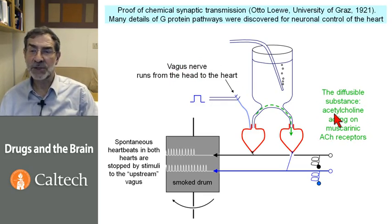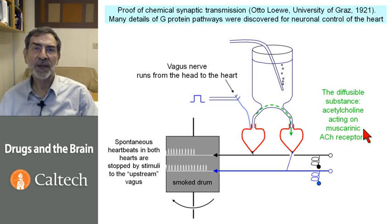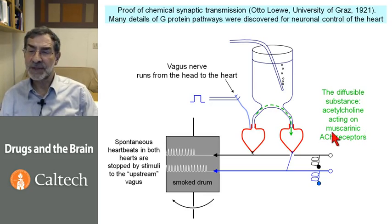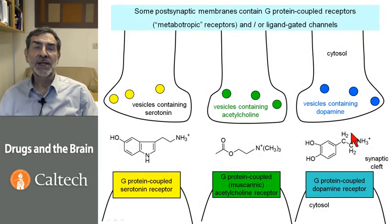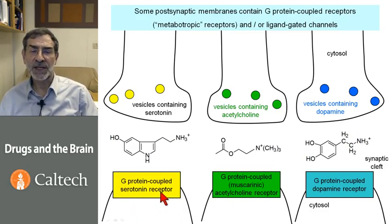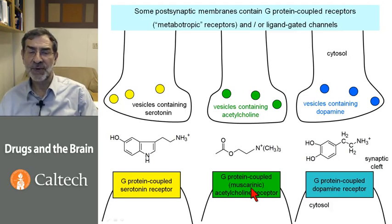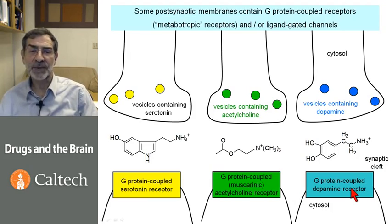We now know that the vagus Stoff is acetylcholine, acting on a particular type of acetylcholine receptor called a muscarinic acetylcholine receptor — entirely different from the nicotinic acetylcholine receptors. These muscarinic acetylcholine receptors are activated, or hijacked, by the mushroom toxin muscarin. In fact, many postsynaptic membranes contain G-protein coupled receptors: a G-protein coupled serotonin receptor, a G-protein coupled muscarinic acetylcholine receptor, and a G-protein coupled dopamine receptor.